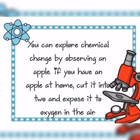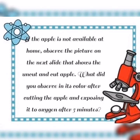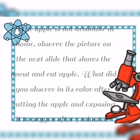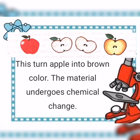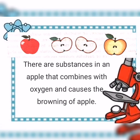On the other hand, you can explore chemical change by observing an apple. If you have an apple at home, cut it into two and expose it to oxygen in the air. If the apple is not available, observe the picture on the next slide showing the uncut and cut apple. What did you observe in its color after cutting the apple and exposing it to oxygen after five minutes? If you observed that it changes from whitish to brownish color, then it undergoes chemical change. The oxygen introduced on the surface of the apple releases free radicals in an oxidation process, turning the apple brown. The material undergoes chemical change — there are substances in an apple that combine with oxygen and cause the browning.